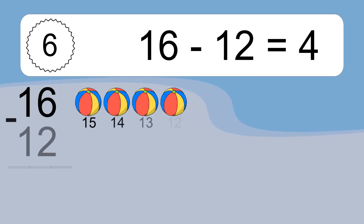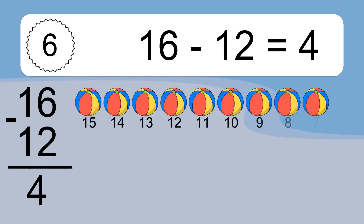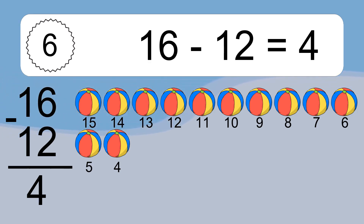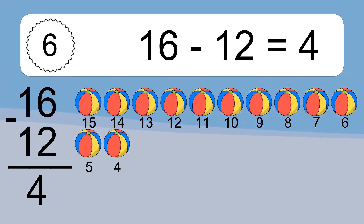16 minus 12 equals 4. Let's count it: 15, 14, 13, 12, 11, 10, 9, 8, 7, 6, 5, 4.